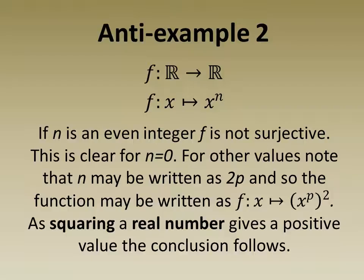For other values, note that n may be written as 2p and so the function may be written as f(x) = (x^p)^2. As squaring a real number gives a positive value and hence never a negative number, the conclusion follows.